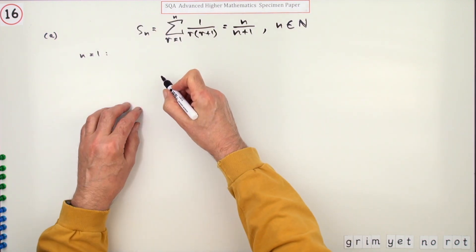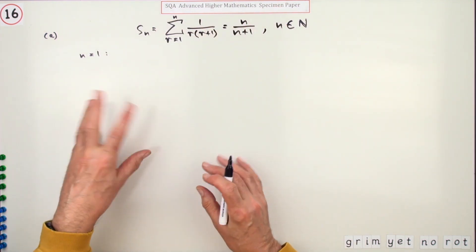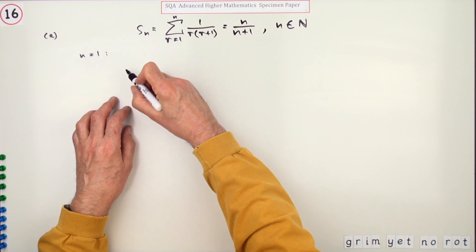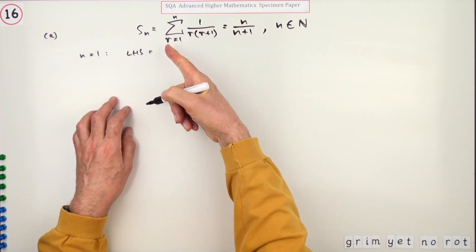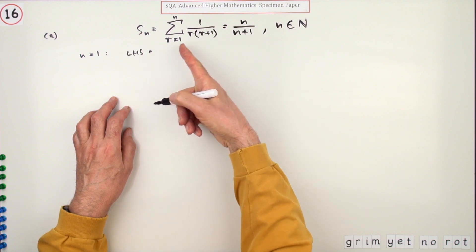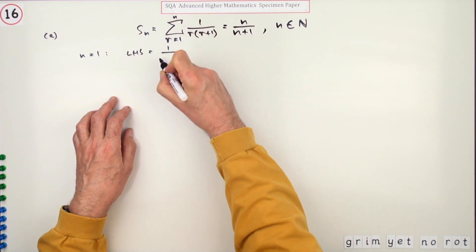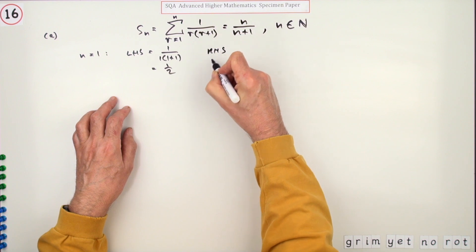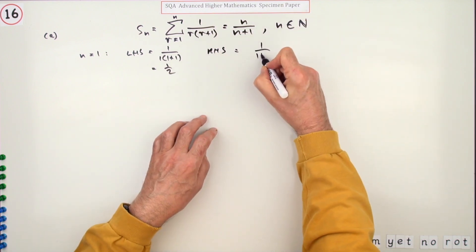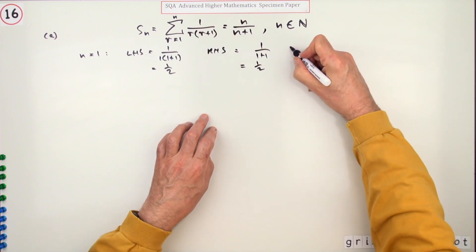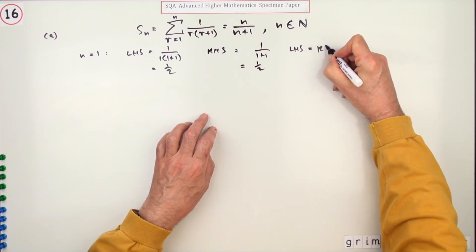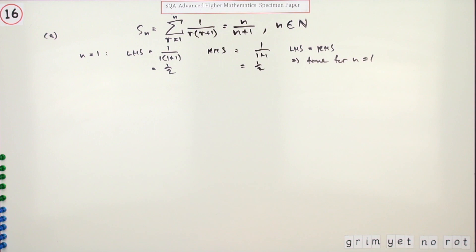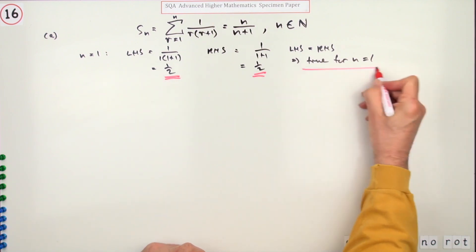You would start by saying what happens at n equals 1 — is it true for n equals 1? Strangely, in the marking scheme they've got that down around the fourth mark, but of course if it wasn't true for n equals 1 you wouldn't need to proceed any further. So for n equals 1: the left-hand side gives 1 over 1 times 2, which is a half. The right-hand side gives 1 over 1 plus 1, which is also a half. So left-hand side equals right-hand side — true for n equals 1.